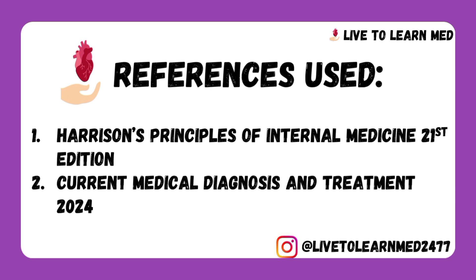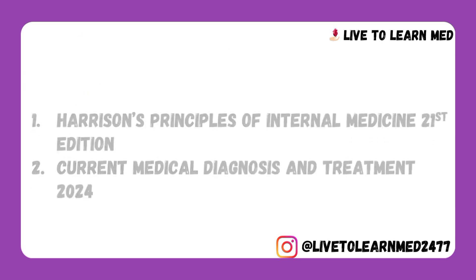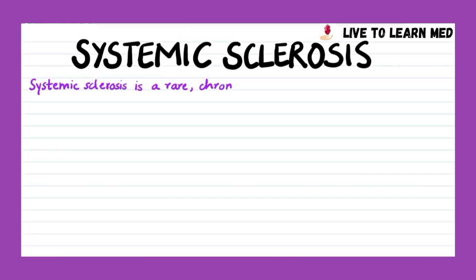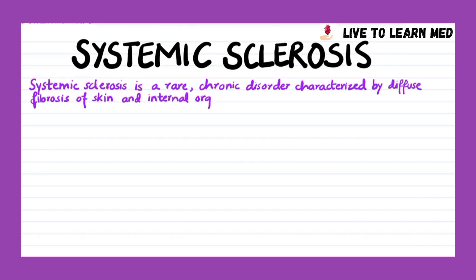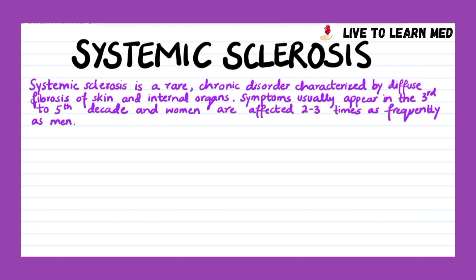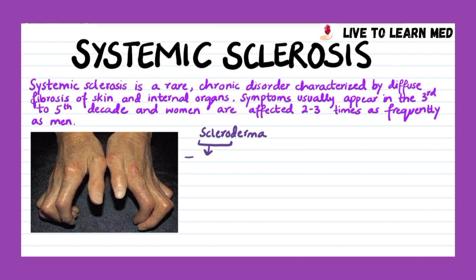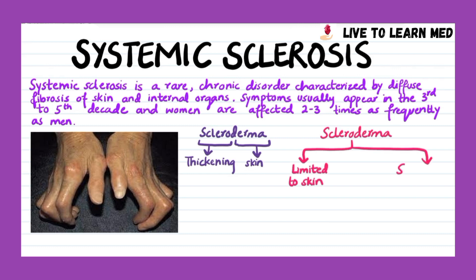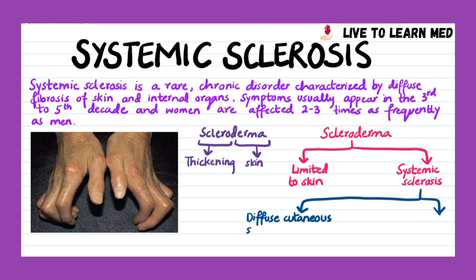Systemic sclerosis is a rare chronic disorder characterized by diffuse fibrosis of skin and internal organs. Symptoms usually appear in the third to fifth decade, and women are affected two to three times as frequently as men. The word scleroderma literally means thickening of skin, since thickened and indurated skin is the distinguishing hallmark of this disease. Scleroderma can be classified as limited to skin or involving other systems, the latter known as systemic sclerosis. Systemic sclerosis is segregated into two major subsets: diffuse cutaneous and limited cutaneous systemic sclerosis.